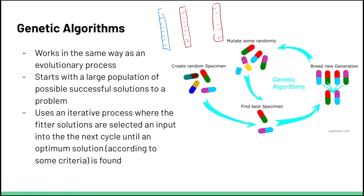When we use genetic algorithms, we have some population of possible successful solutions to a problem, and these solutions are usually represented by some collection of information. We use an iterative process where the fitter solutions are those that better fit some pre-selected criteria — which might be reviews or distance — until we get some optimal solution.